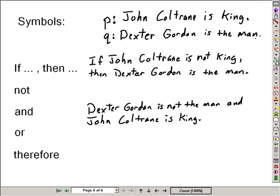Now, using that idea, a sentence like John Coltrane is king might be represented with the letter P. Dexter Gordon is the man might be used with the letter Q. So let's take this statement and rewrite it using the symbols.